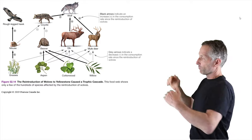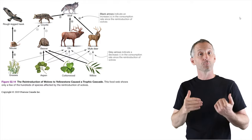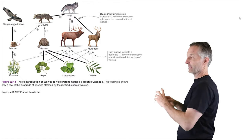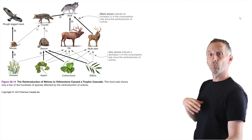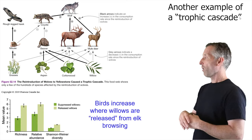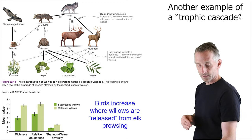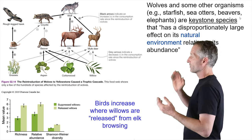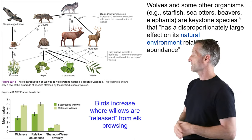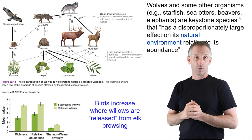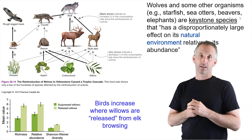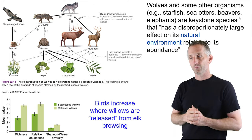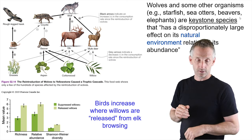Here's a new food web where wolves used to be absent. Adding wolves means they're foraging on different things and influencing them through the fear of predation, which has a big influence on plants, the things that eat those plants, and even more removed ecosystem components such as birds — a whole series of cascading top-down effects. Wolves and other organisms like starfish, sea otters, beavers, and elephants are called keystone species because they have disproportionately large effects on the natural environment relative to their abundance.